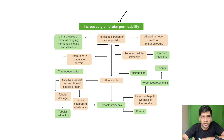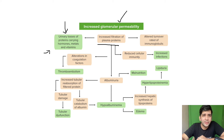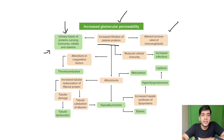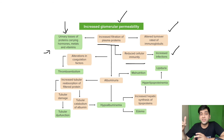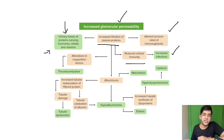Increased glomerular permeability results in urinary loss of proteins, including proteins carrying hormones, metals, and vitamins. There is also an altered turnover of immunoglobulins — when you lose immunoglobulins, turnover increases, cellular immunity is reduced, and there is an increased risk of infection. So a patient with nephrotic syndrome may not always present with facial puffiness; they can present with recurrent infections due to loss of immune globulins.